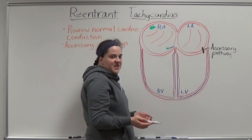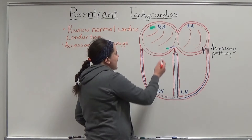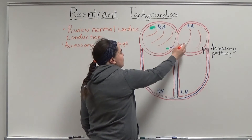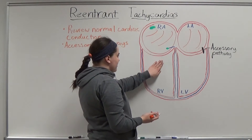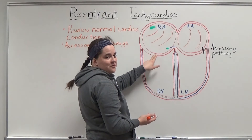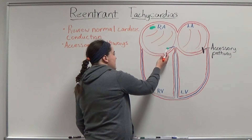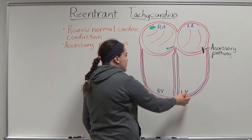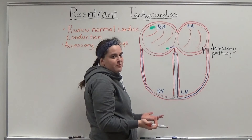Before we talk about reentrant tachycardias, let's review normal cardiac conduction. When the sinus node fires, it sends a wave of depolarization cell by cell through both atria. However, it doesn't depolarize the ventricles because the tissue that separates the atria and the ventricles is non-conductive. When the impulse reaches the AV node, it's paused and then sent through the bundle of His and the Purkinje fibers, which cause the ventricles to contract very quickly, and then the impulse is terminated.